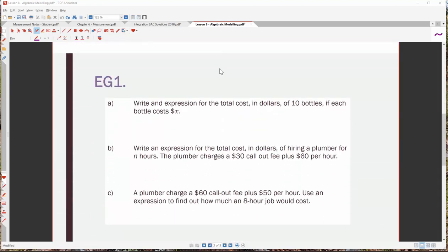So here's a couple of examples. Write an expression for the total cost in dollars of 10 bottles if each bottle cost X dollars. So we don't really know how much each bottle costs, so that's X dollars. But we're buying 10 of the X dollar bottles. Now if we're buying 10 bottles and each bottle costs $2, you would go, oh it's easy, 10 lots of $2 is $20. In this scenario here we don't know what the actual total cost is but we know it will be acquired by doing 10 lots of X, which equals 10X. So our expression is 10X.